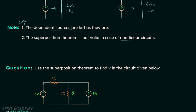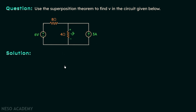Now we will move on to the implementation. I have taken one question to understand how we can use superposition to find the voltage across an element. Here is our network and we need to find the voltage V using the superposition theorem. In the given network we have two sources and two resistors, out of which we need to find the voltage across the 4 ohm resistor.